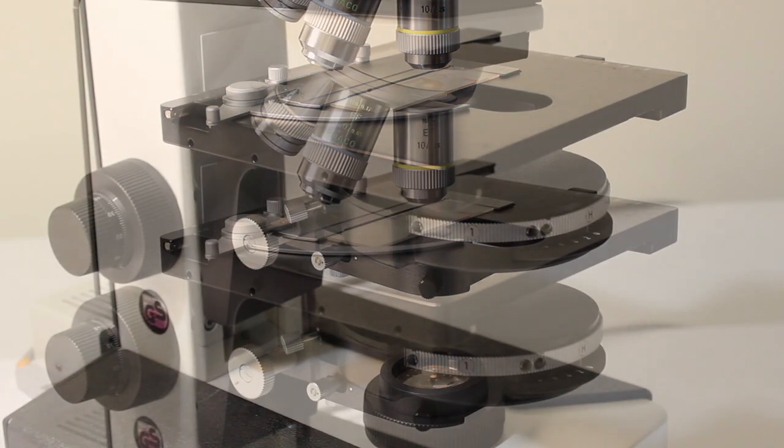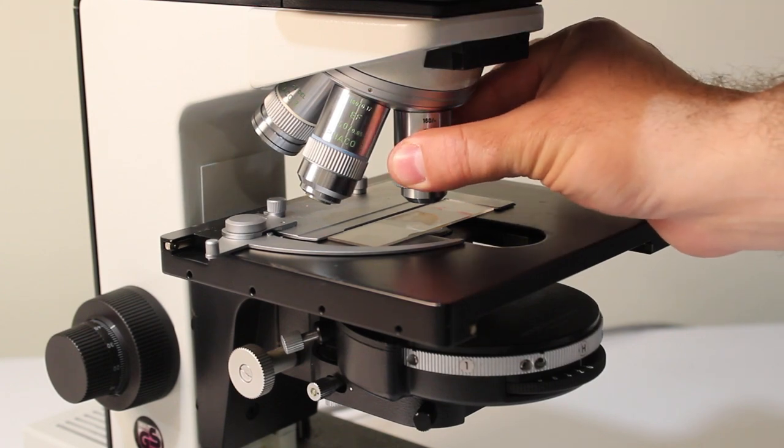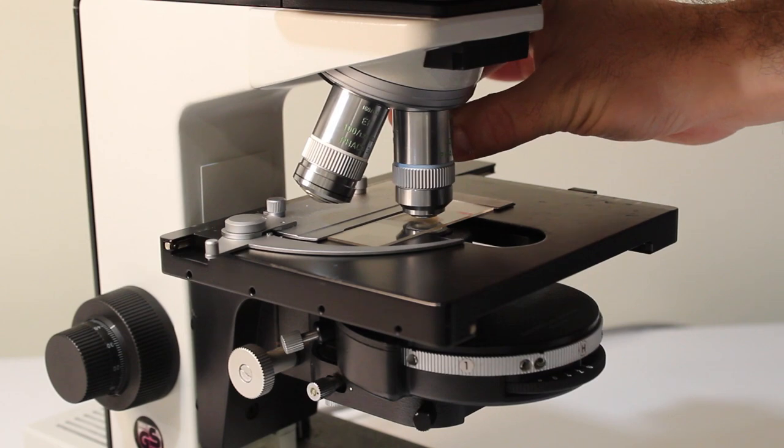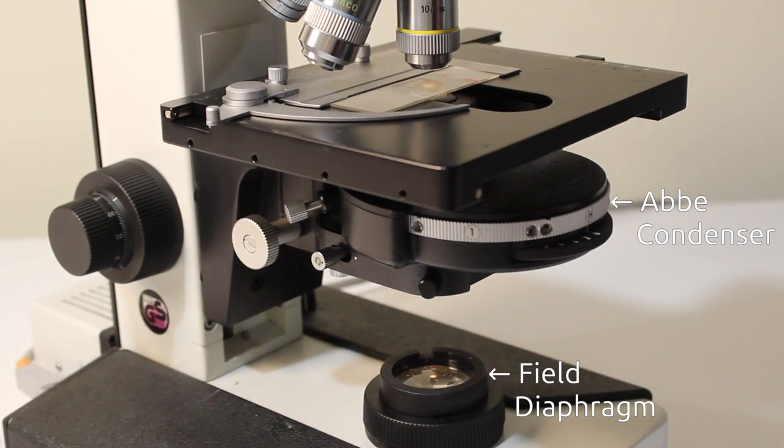For this video I am going to assume that you know how to focus on your sample and switch lenses. If you are unfamiliar with these processes, please watch episodes 3 and 4 of Microbrews. I am also assuming you have a microscope with a field diaphragm and an Abbey condenser.